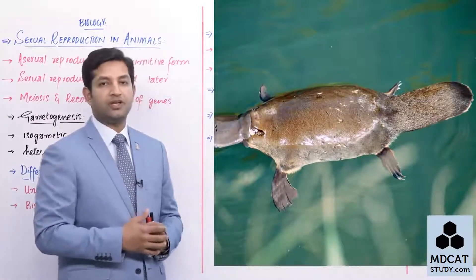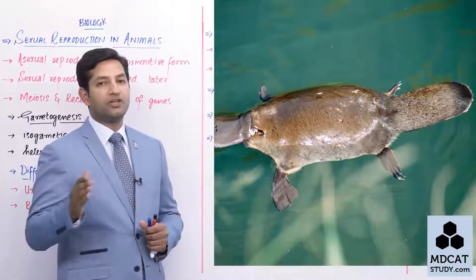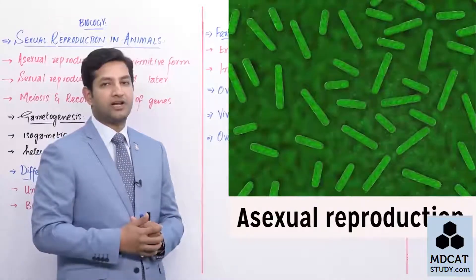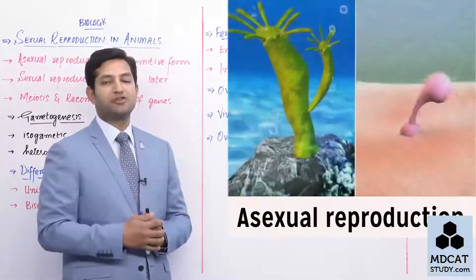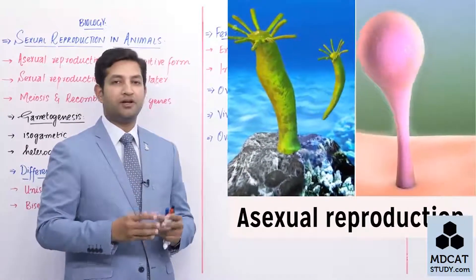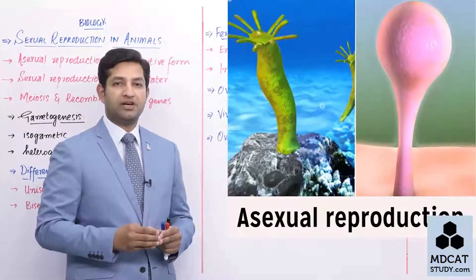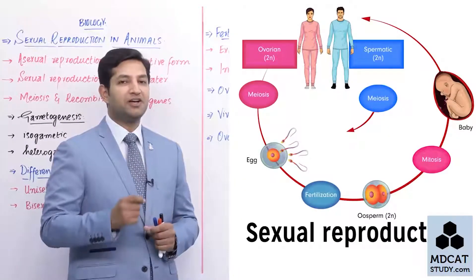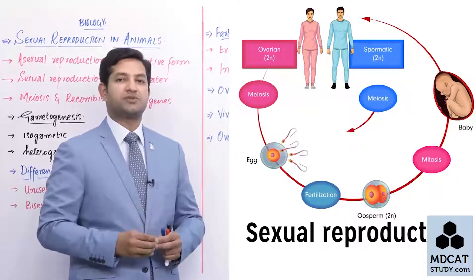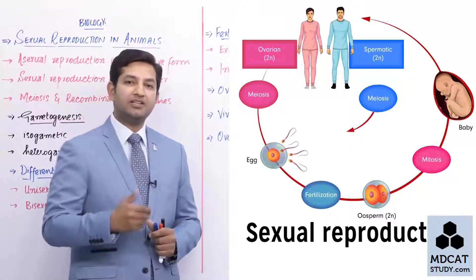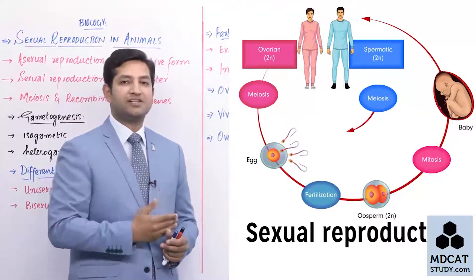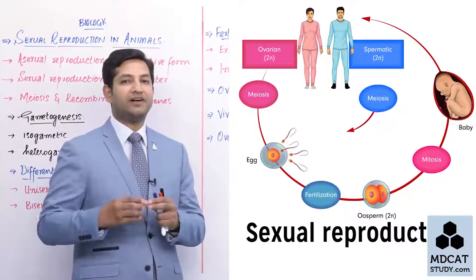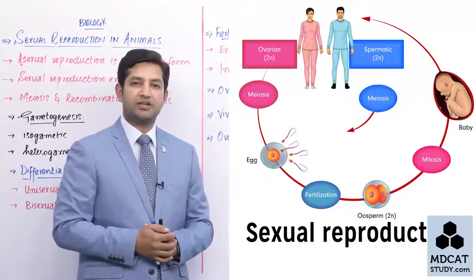To summarize everything we have observed: in asexual reproduction, rapid propagation is seen and the population spreads quickly, but because of the identical genetic makeup being inherited, if any epidemic or disease spreads, the entire population would be affected. On the other hand, in sexual reproduction, due to genetic recombination, organisms have developed diversity and variety, which ultimately means the organism evolves from less resistant to more resistant, resulting in survival of the fittest. This session on sexual reproduction is enough, and we will continue with the next topic in the next session.